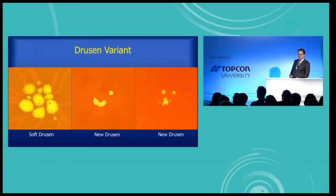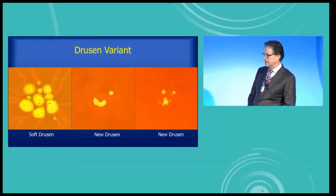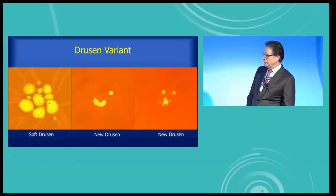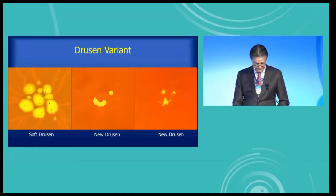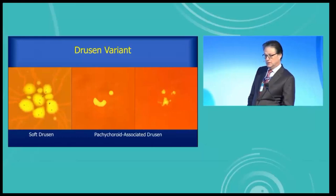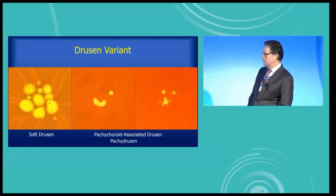I noticed a while ago that there is a special kind of drusen associated with thick choroids. I made this drawing to show the characteristics. Regular drusen have a poorly defined outer border — they're kind of blob-like and pushed together — and you can see the larger choroidal blood vessels underneath. These newer drusen have strange shapes: they're well-defined, with cut-out sort of shapes or undermined edges. The choroid is hard to see any blood vessels in — it's red. Since these are associated with thick choroid or pachychoroid, we call them pachychoroid-associated drusen. That's too much to say, so I just call them pachydrusen.